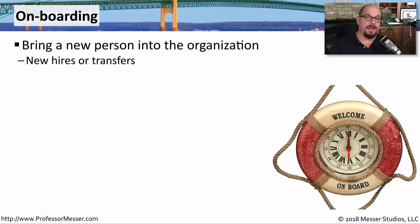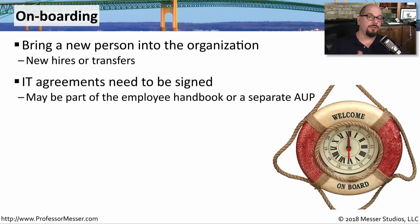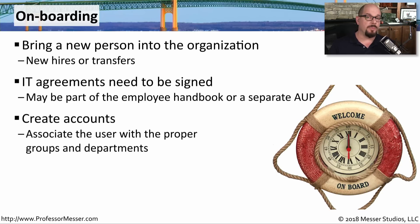There are a number of important processes that have to be followed during the onboarding process — when you're hiring someone new from outside the organization, or someone transferring from one part of the organization to another. From an IT perspective, you may require that someone understand the policies outlined in the employee handbook, or there may be a completely separate acceptable use policy that everyone signs. You also need to create user account information, associate that user with particular groups or departments, and ensure they have email access.